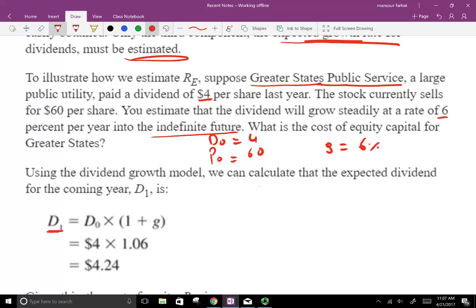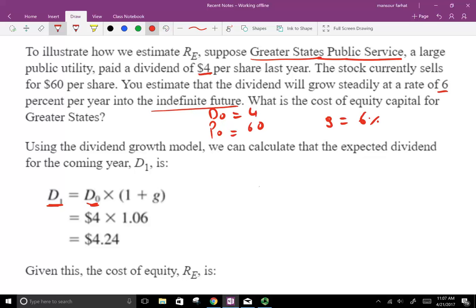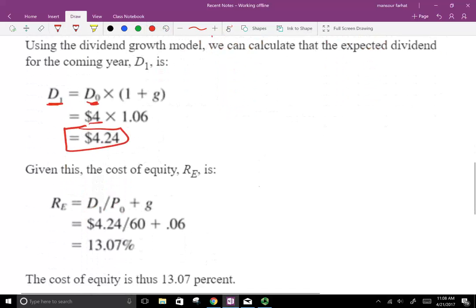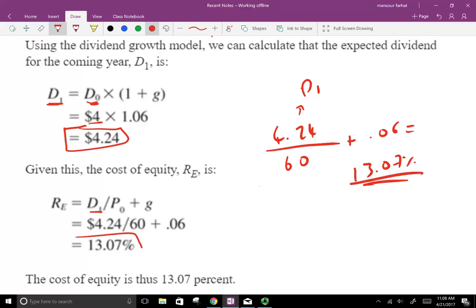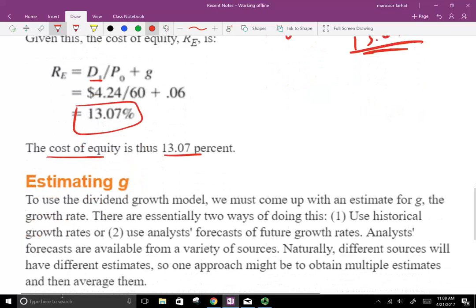First, let's find the future dividend. The future dividend is the current dividend, D0, times 1 plus G. So $4 times 1.06. D1, the numerator, is going to be $4.24. Now we're just going to plug in the figures. We have D1, $4.24, divided by the current price of $60 plus 0.06. That gives us a required rate of return on the stock of 13.06%. What we can say is that the cost of equity is 13.06%. As a company, you have to earn 13.06% to satisfy the equity holder, which is your cost of equity.